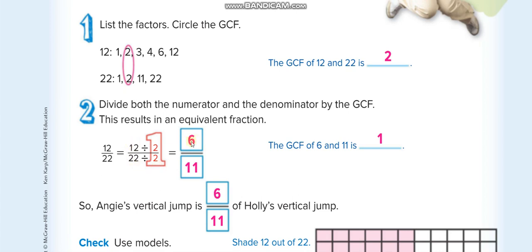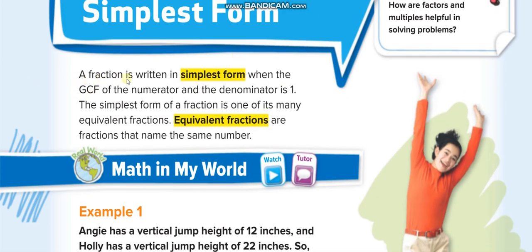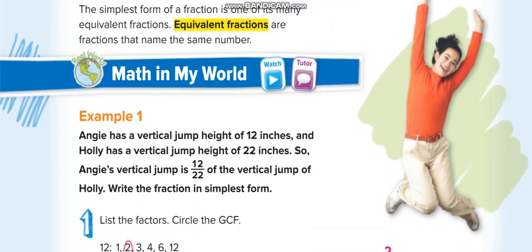There is one information: a fraction is written in simplest form when the GCF of the numerator and the denominator is 1. How will you make sure that the fraction is in the simplest form? The GCF of the numerator and the denominator will become 1.